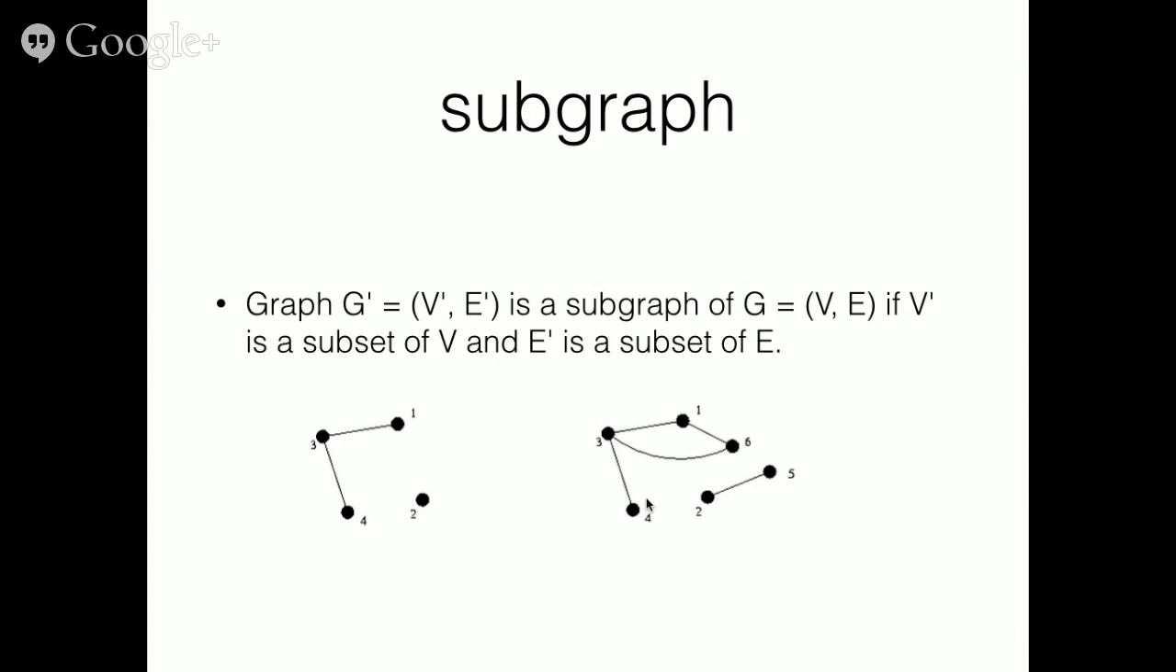A subgraph. We can show a subgraph as a graph that is a subgraph of our main graph. For example, here in G prime with the group of vertices V prime and E prime is a subgraph of G with a group of vertices and edges that are shown in the right side. When V prime is a subset of V and E prime is a subset of E, then we can say that G prime is a subset of G. As shown down here, the graph in the left side is a subgraph of the graph in the right side.